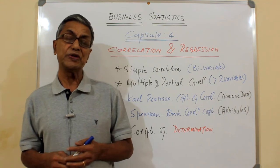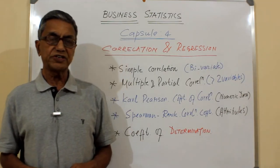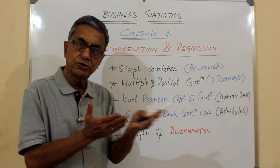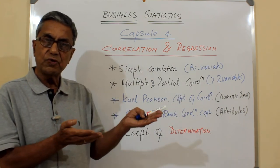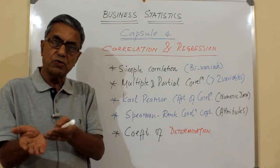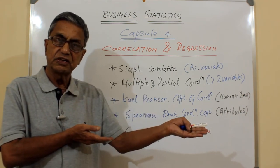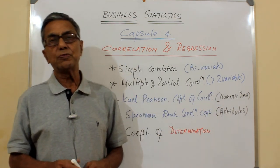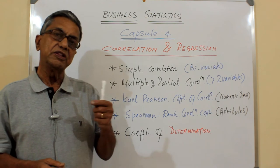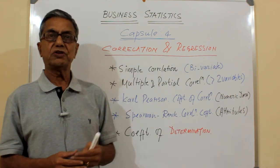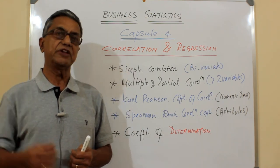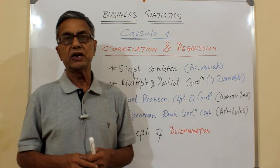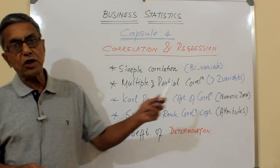In forthcoming sessions we will see what simple correlation is, where we try to relate two variables X and Y — whether X is influencing Y or Y is influencing X. We will also talk about multiple and partial correlation, where variables are more than two — how the change in one variable affects several other variables, or how changes in multiple variables affect the dependent variable.